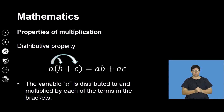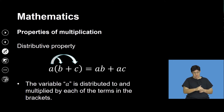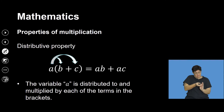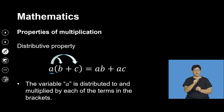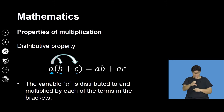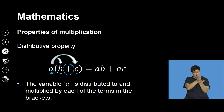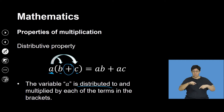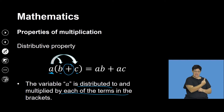The distributive property says that when I have a term outside the bracket, I need to distribute it using multiplication to the terms inside the bracket. So it's going to be A multiplied by B, which gives AB, and A multiplied by C, which gives AC. Everything else stays the same — the sign in the middle, which is plus, does not change. Variable A is what we say we are distributing using multiplication to each and every term inside the bracket.